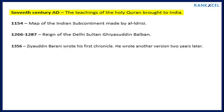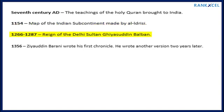Key dates: 7th century AD — teachings of the Holy Quran brought to India. 1154 — map of the Indian subcontinent made by Al-Idrisi. 1266 to 1287 — reign of Delhi Sultan Ghiyasuddin Balban. 1356 — Ziauddin Barani wrote his first chronicle; he wrote another version two years later.